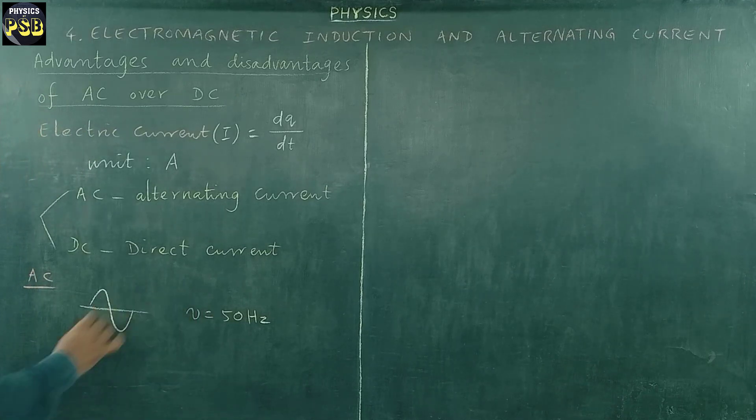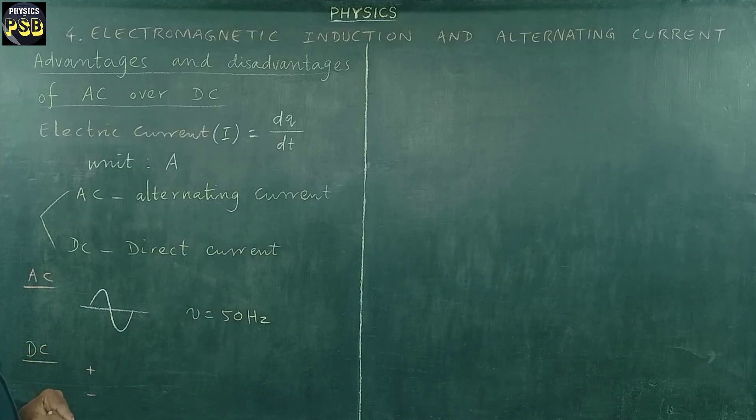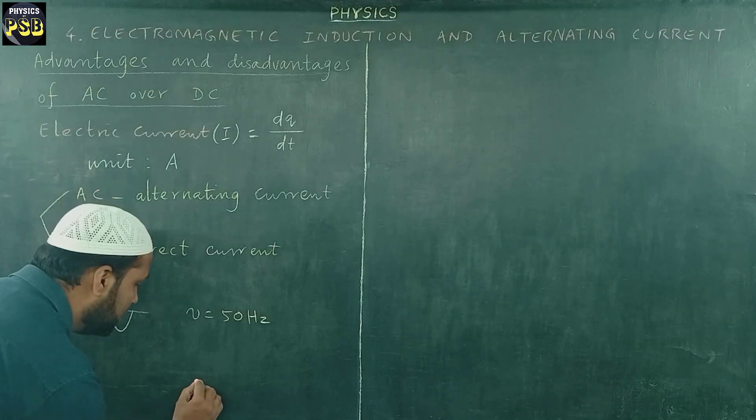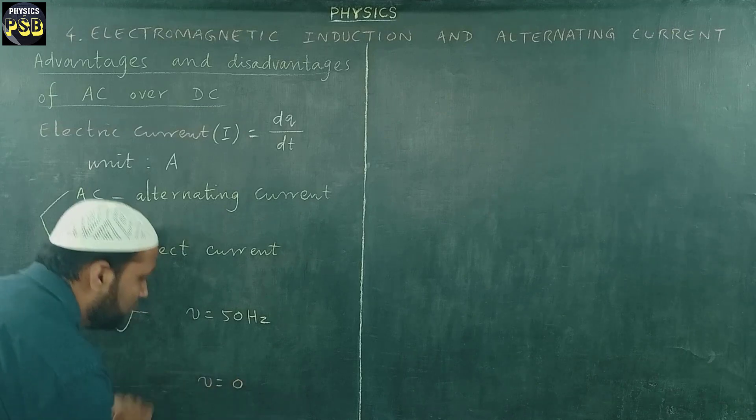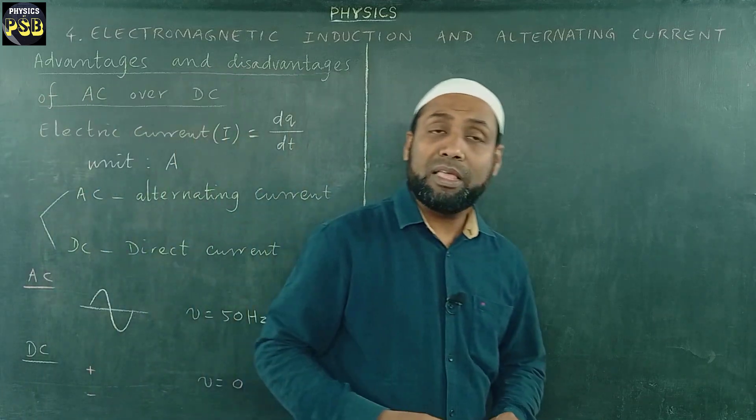Whereas, when we talk about direct current, in case of direct current, the polarity is plus and minus signs. These two things remain fixed. The direction, in case of direct current, do not change. So its frequency is found to be zero. It does not change its polarity or direction. These are the differences between AC and DC.